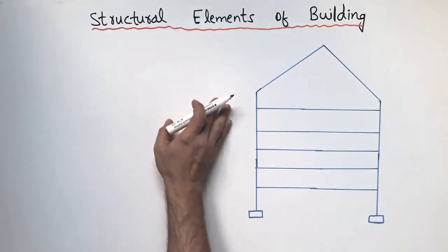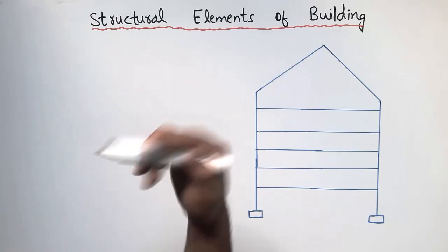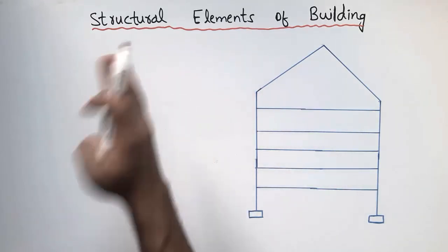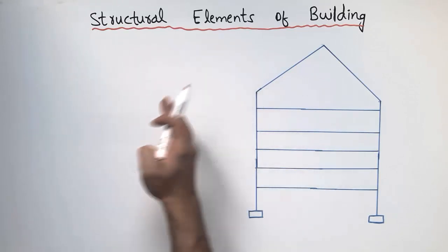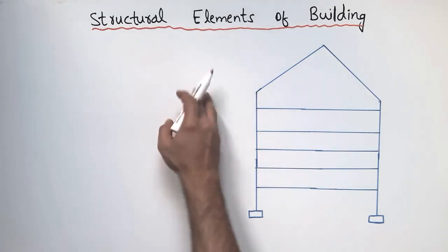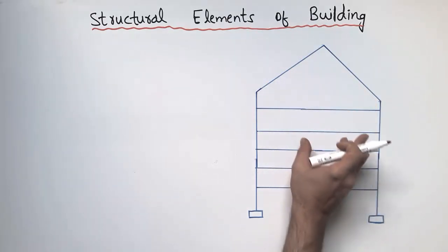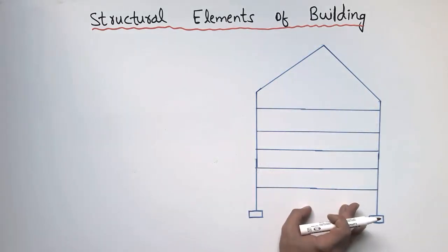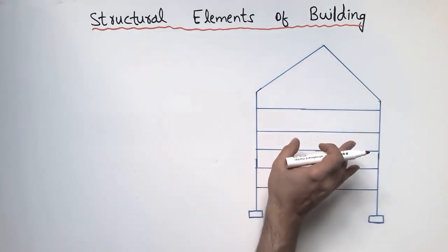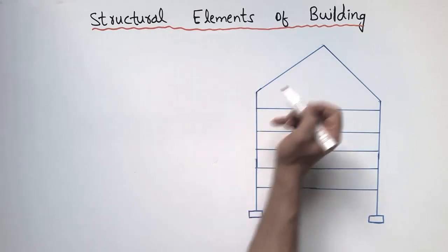In a building there are different structural elements which each have their own purpose. For example, a beam is designed for bending, a column is designed for compression, and so on. In this lecture we are mainly focused on the structural elements of a building, starting from the top. This is the general elevation view of the building.